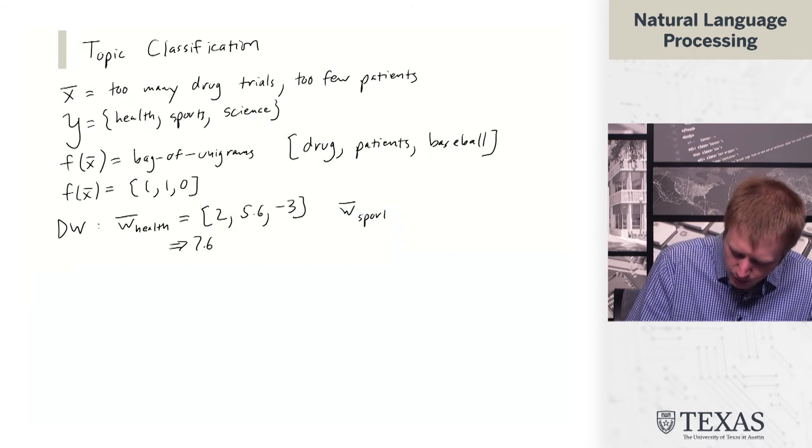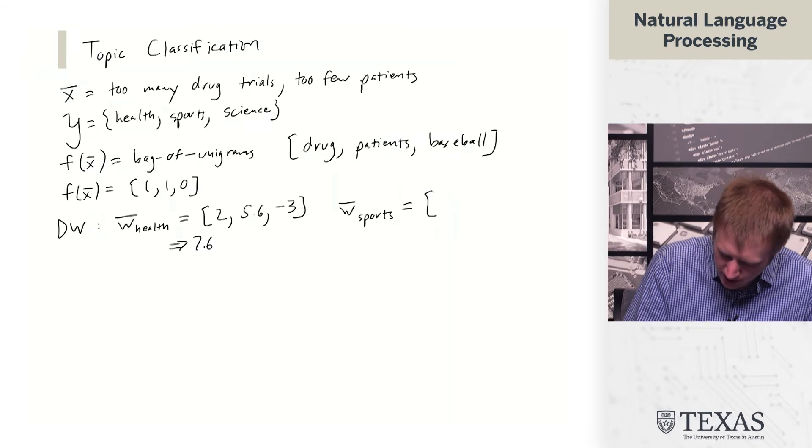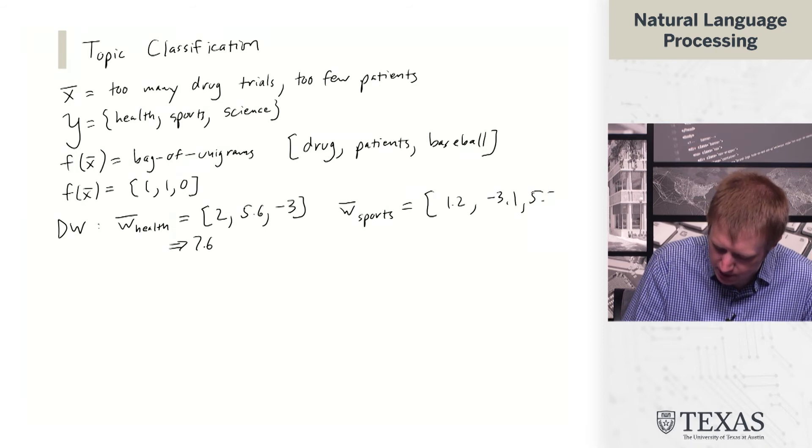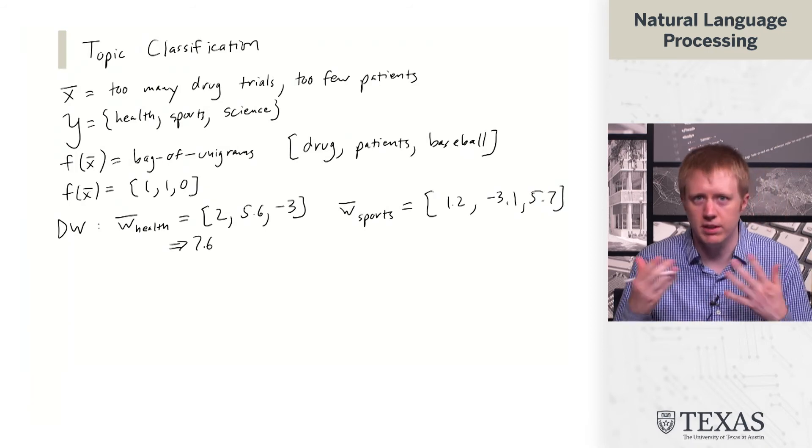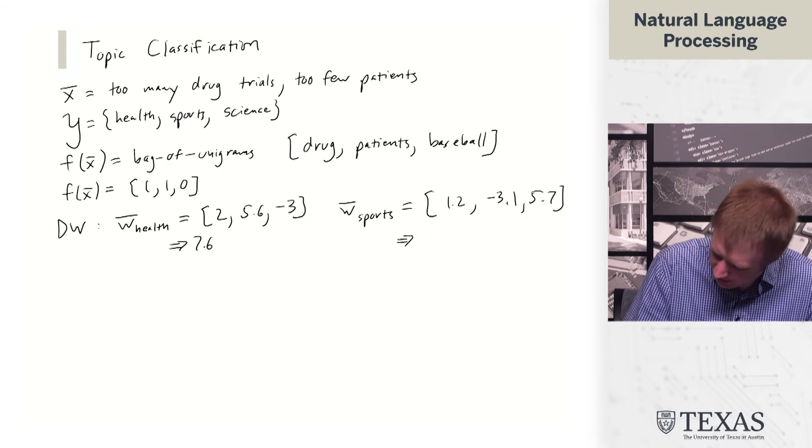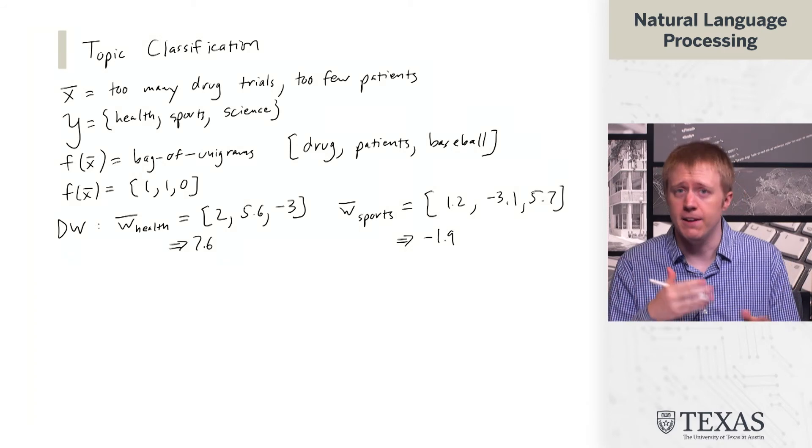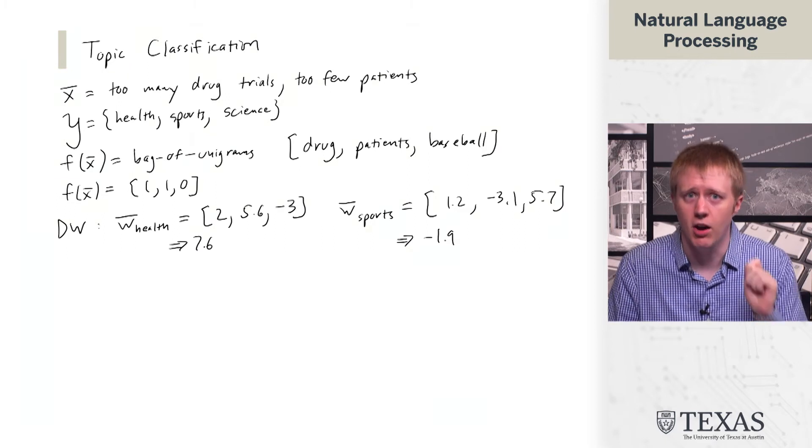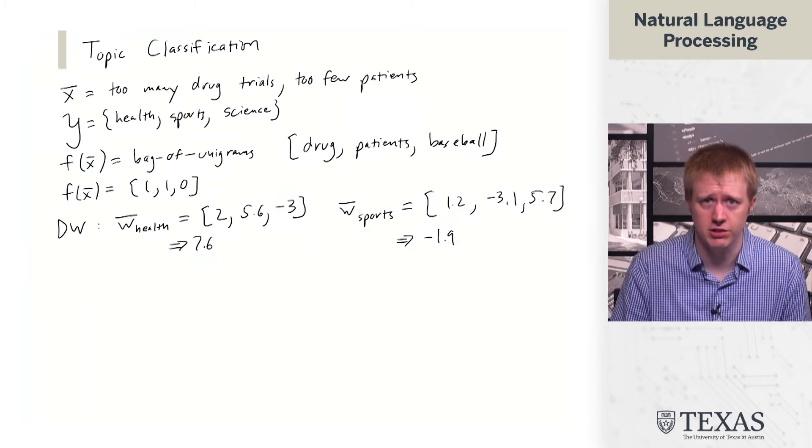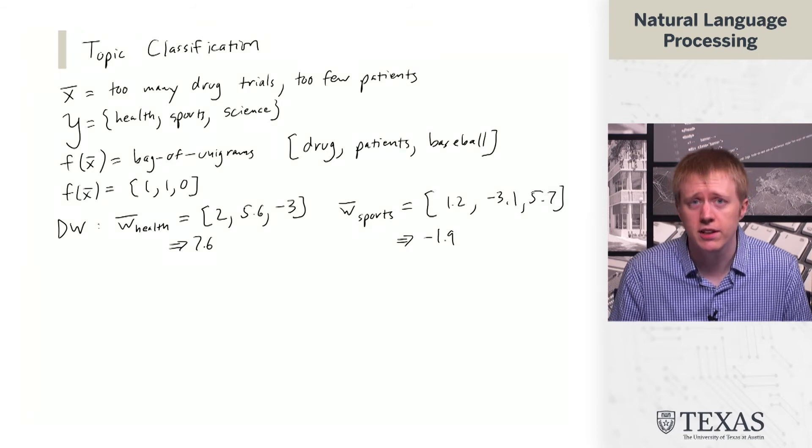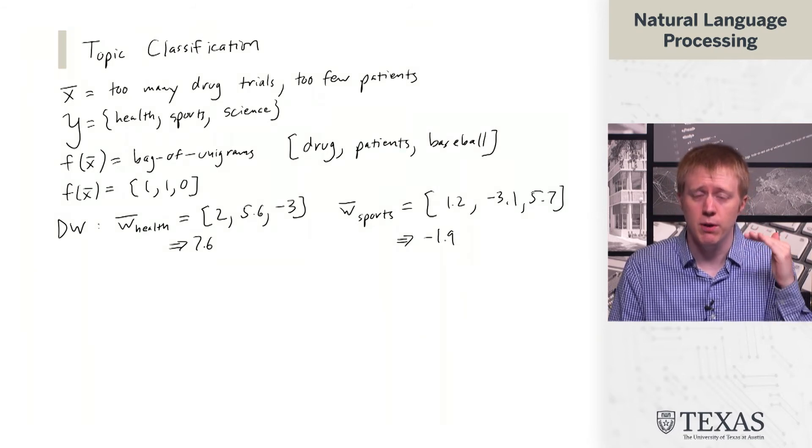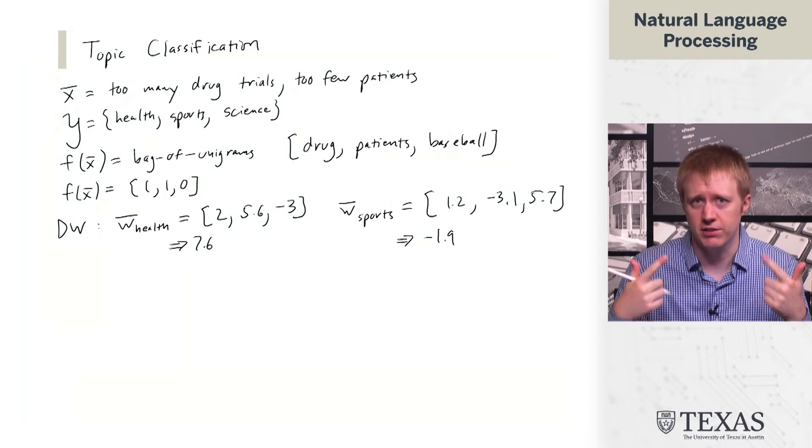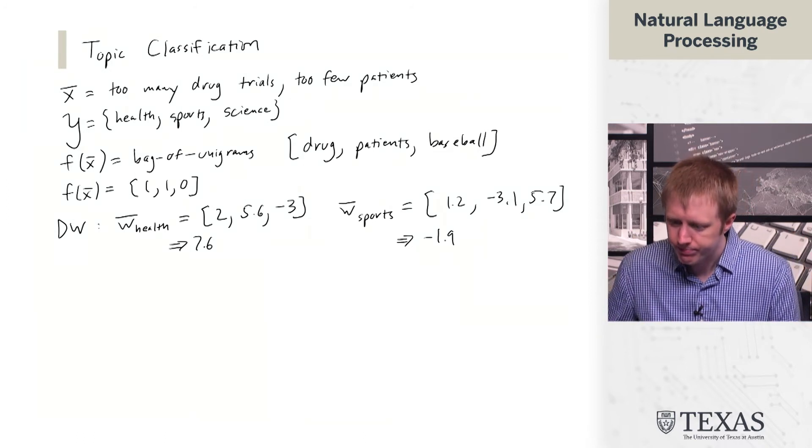And to throw out one for weights for sports, maybe drug shows up there sometimes, patients not so much, and then baseball obviously is going to have a high weight here. This gives -1.9. We're not going to show for science, but basically you compute these three dot products, and health is going to be the highest, so that's the classification decision we pick. The only difference from before is that we have one weight vector per class, and rather than comparing against zero, we're saying which of these weight vectors gives us the highest score.